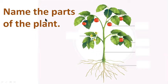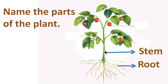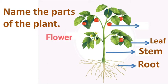Name the parts of the plant. This is a plant — we will tell the parts of the plant. At first, this is root. This is stem. The main part of the plant is stem, and root is underground. This is leaf. This is fruit. And these are flowers.